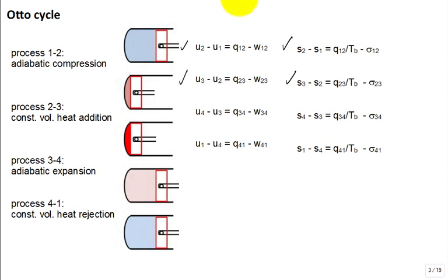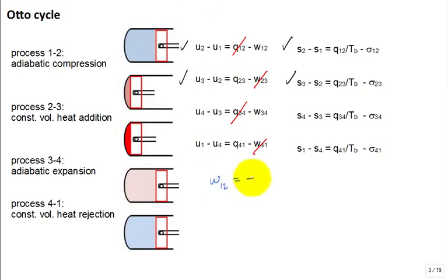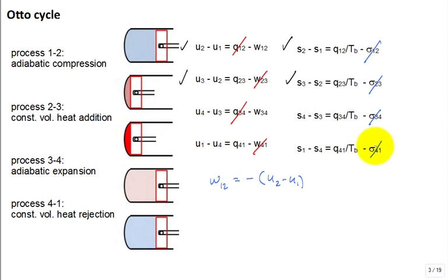Which of those Q's are zero? Which of the works are zero? From the first law we find that the work one to two is equal to the negative change in internal energy — true. All right, let's take a look at the second law.